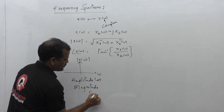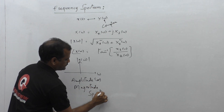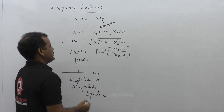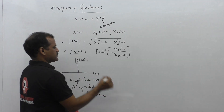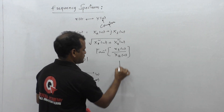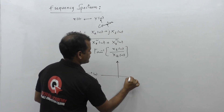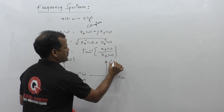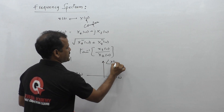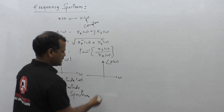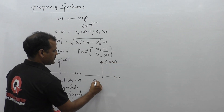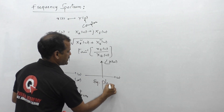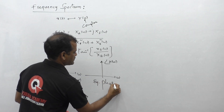Similarly, if I plot the phase on the frequency axis by taking omega on the x-axis and the phase of X of omega on the y-axis, this plot is named the phase spectrum of the given signal x of t.